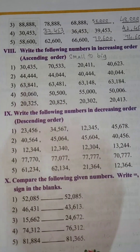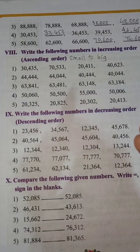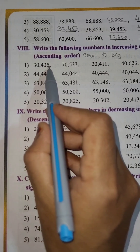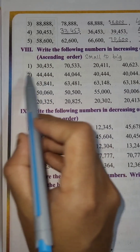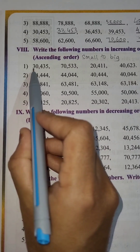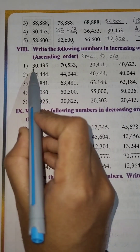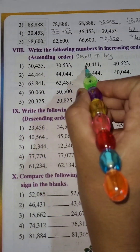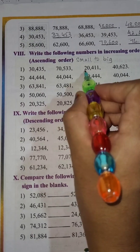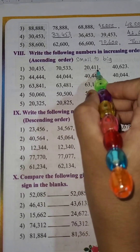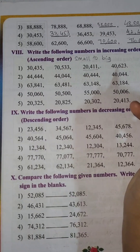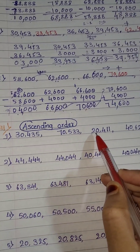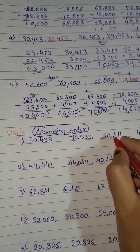So here we have 30,000. How do you find out? You have to always start looking at the number from the highest place. So unit, 10, 100, 1000, 10,000 — you have to see the number in the highest place, which is the 10,000 place. Here it is 3, and it is 7, here 2, here 4. So the smallest is 2, meaning 20,411 is the first smallest number. So I will write 20,411.